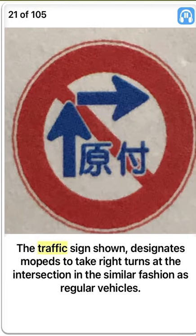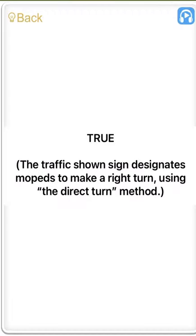True. The traffic sign shown designates mopeds to take right turns at the intersection in the similar fashion as regular vehicles. True. The traffic sign designates mopeds to make a right turn using the direct turn method.